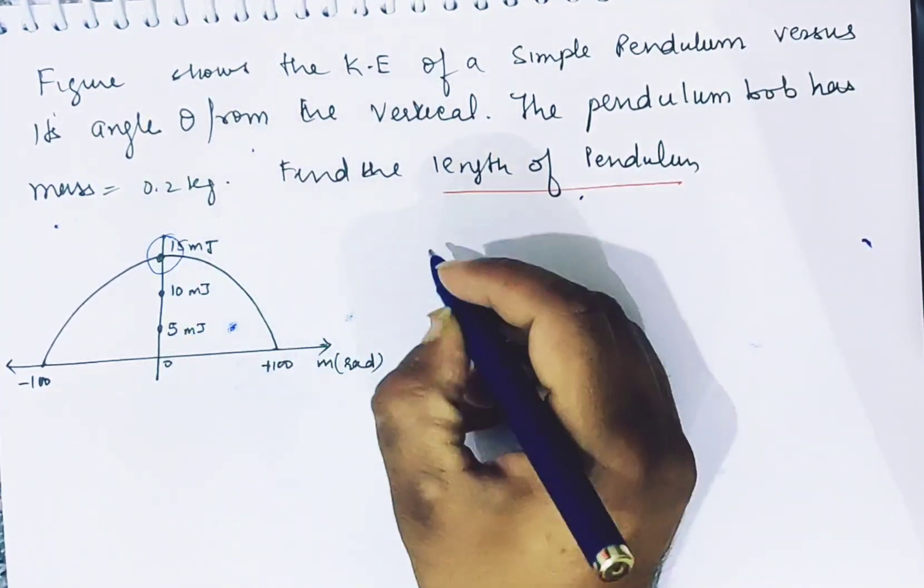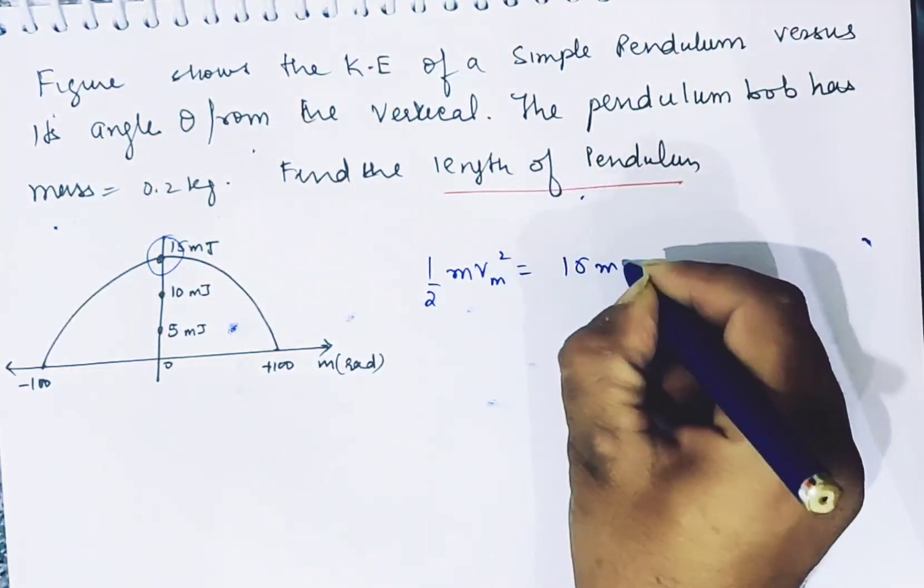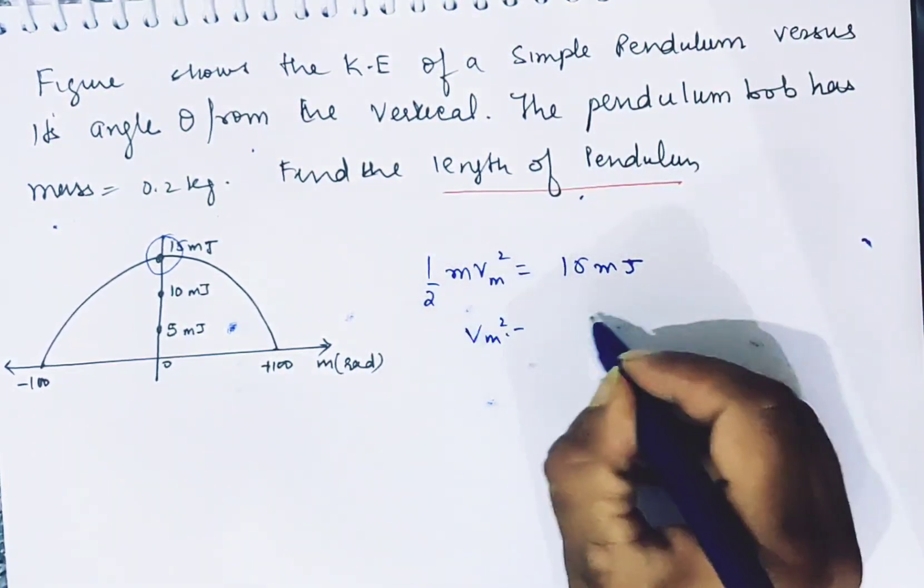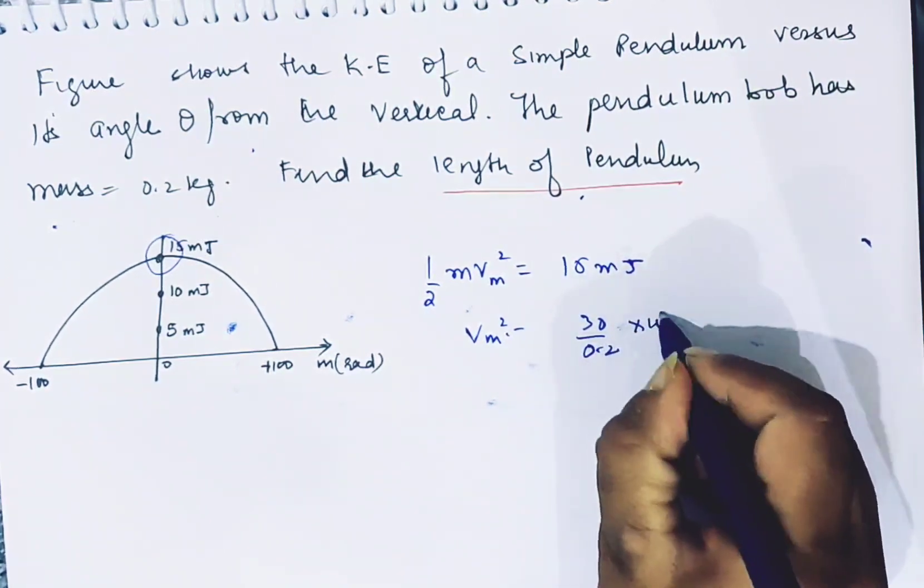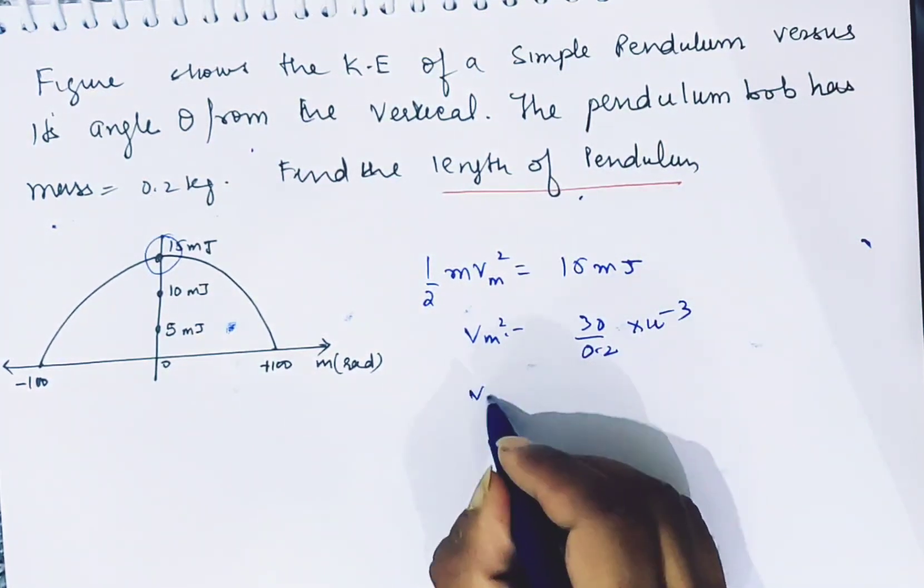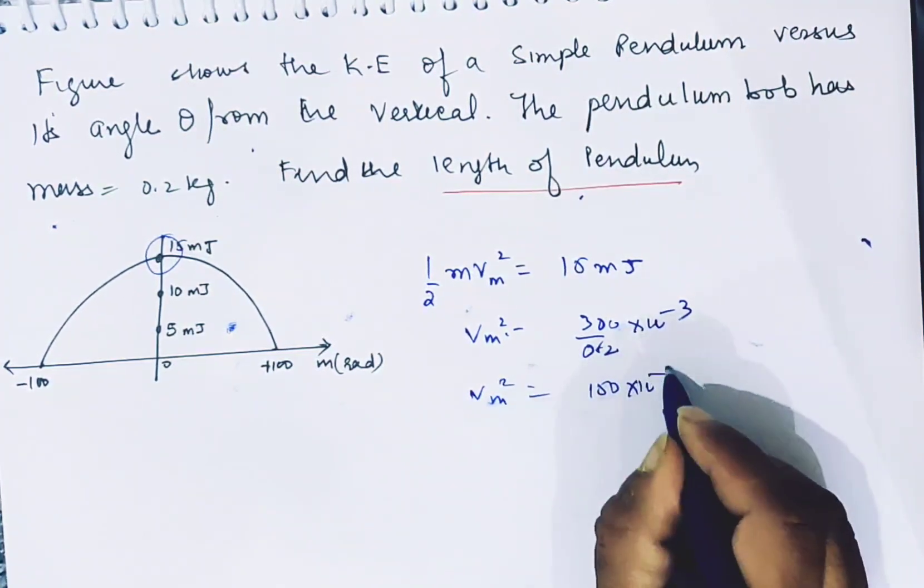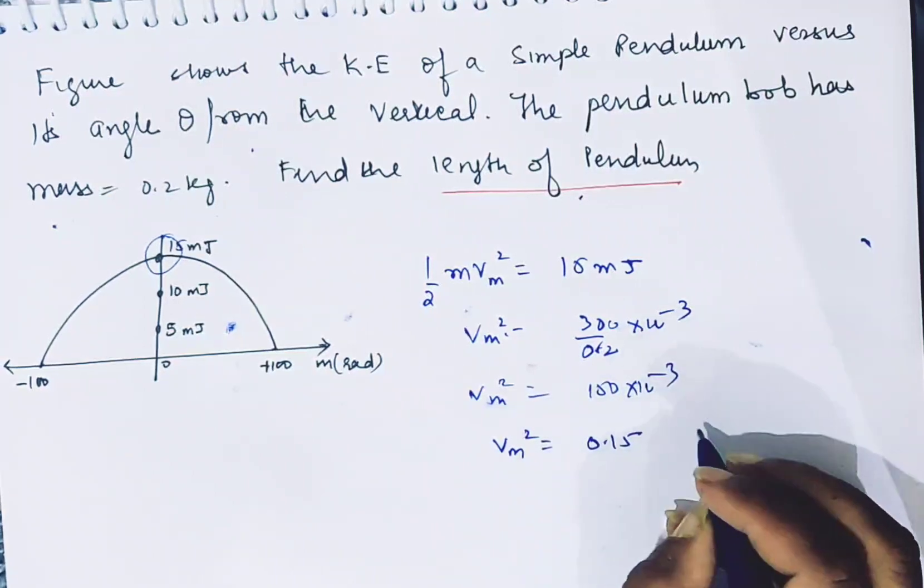Maximum kinetic energy we can write: half m v maximum squared is equal to 15 millijoule given. This is vm squared. Mass 0.2 times 10^-3, millijoule is equal to 150 times 10^-3, so vm squared is equal to 0.15.